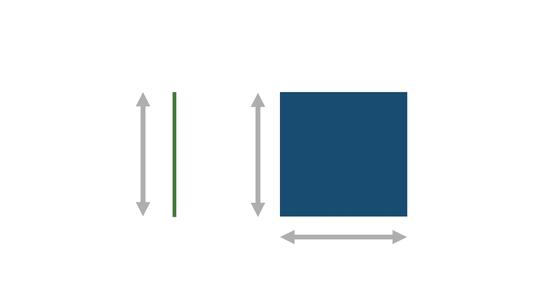Is a line equal to a square? At first, this question may sound a bit ridiculous. Of course they're different. A line is one dimension, a square is two dimensions. Intuitively, the answer is obvious. The question becomes trickier, though, when we try to justify this intuition.